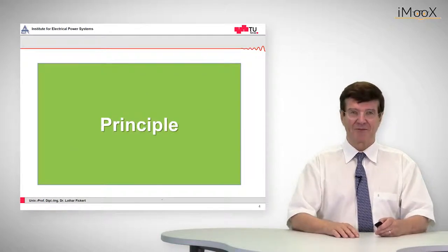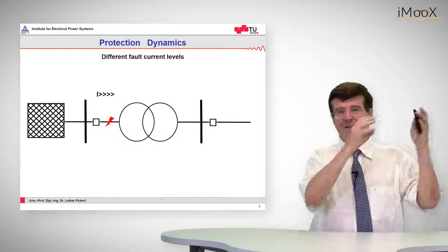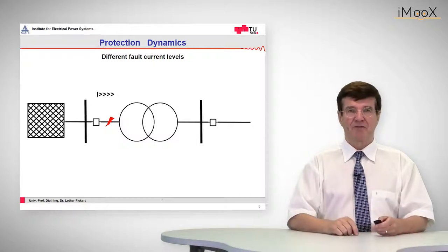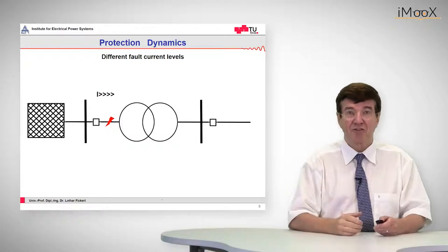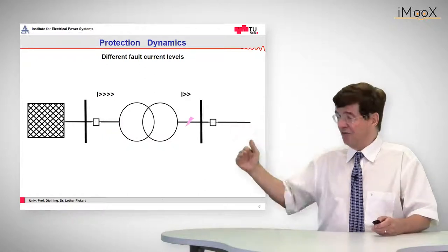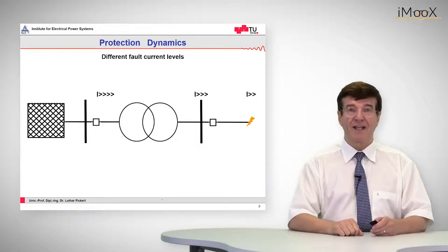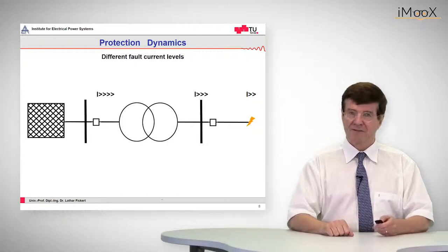First, let's look into the principle. A transformer can be thought of as a lumped impedance between the source and the consumer. We can have faults upstream of the transformer, which are at a very high short circuit level. We can have faults downstream, which have a lower short circuit level, and also faults at the end of a long line.